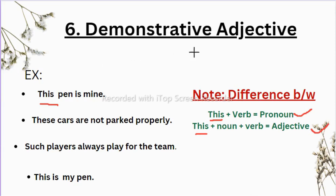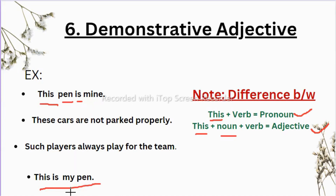For example, 'this pen is mine' — after 'this,' the noun 'pen' comes and then the verb 'is,' so this is a demonstrative adjective. But 'this is my pen' — after 'this,' the verb comes directly, so that is a demonstrative pronoun. Both sentences give the same meaning, but the structure differs: demonstrative adjective follows the pattern 'this + noun + verb,' while demonstrative pronoun follows 'this + verb.'